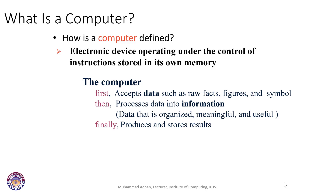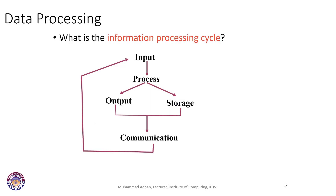Finally, the computer produces the result and shows it on an output screen. These are the three main steps of the information processing cycle: accept data from an input device, process it, then store or display it on the output device. We can also communicate or transfer that data to another machine. Nowadays communication has become a very important part of the information processing cycle because we use smartphones and computers for communication very often.